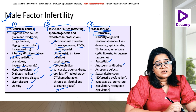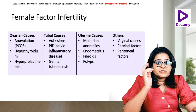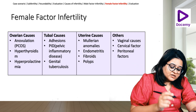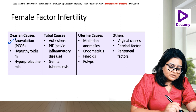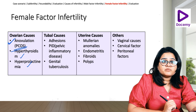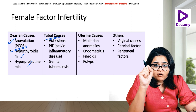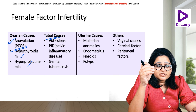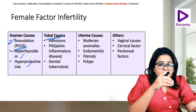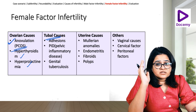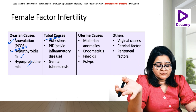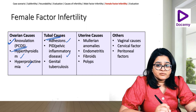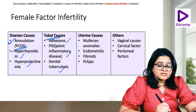For female infertility, we divide causes as ovarian, tubal, uterine, and other causes. Ovarian causes commonly include anovulation, which is seen in PCOS, hyperthyroidism, and hyperprolactinemia. Tubal causes could be a block or disturbance in motility, since tubal motility is needed for the ovum to reach the ampulla and for the embryo to reach the uterus. This can result from adhesions due to previous surgery, endometriosis, pelvic inflammatory disease causing salpingitis, or genital tuberculosis.